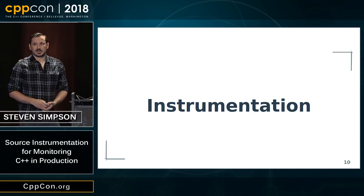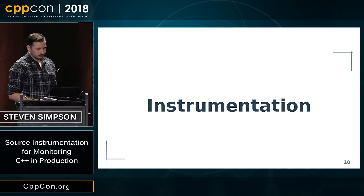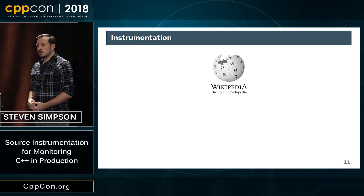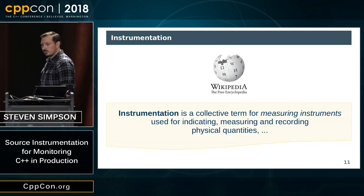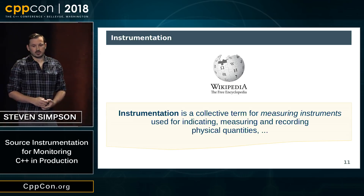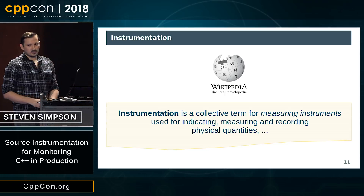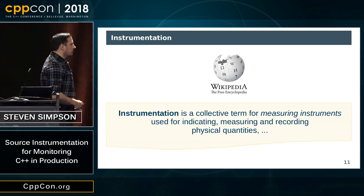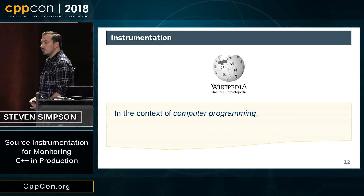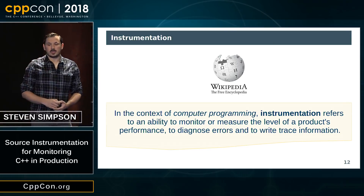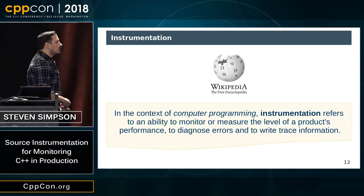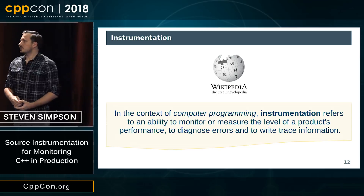So let's talk about instrumentation — it's in the title of the talk. Let's get a definition; you should always start with a definition. Wikipedia says instrumentation is a collective term for measuring instruments used for indicating, measuring and recording physical quantities. And even better, it says in the context of computer programming, instrumentation refers to an ability to monitor or measure the level of a product's performance to diagnose errors and write trace information. This is exactly what it is.